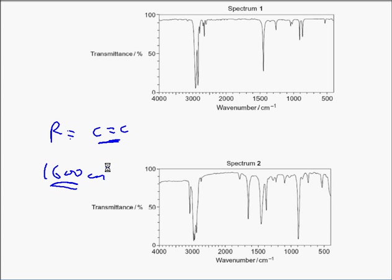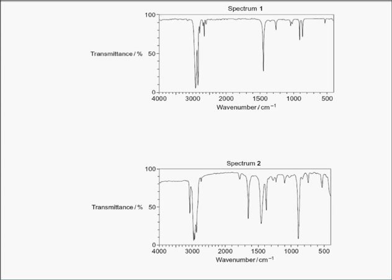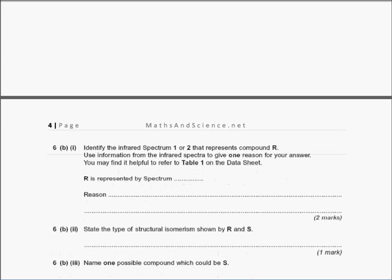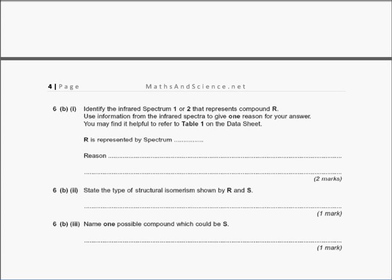You'd expect the wave number something like 1600 centimetres inverse, and if I look here we're at about 1560 - there's no peak around there. But at about 1620 there we go - we've got a peak, which is a carbon-carbon double bond peak. So you just have to read the table.